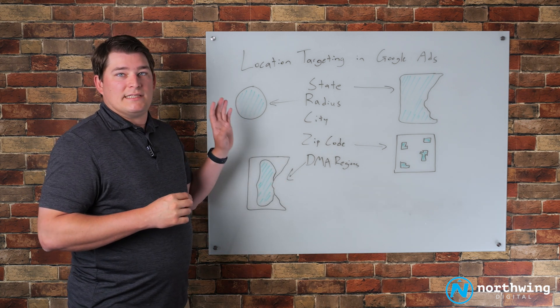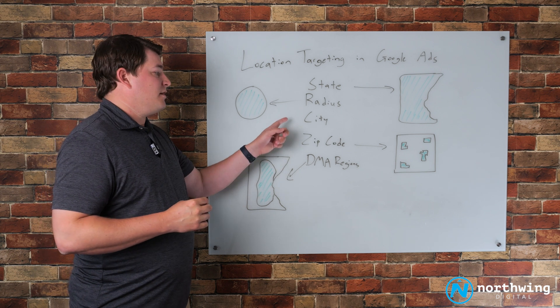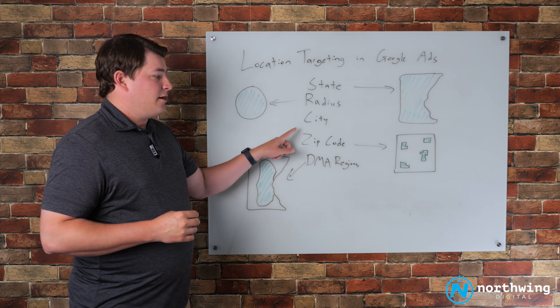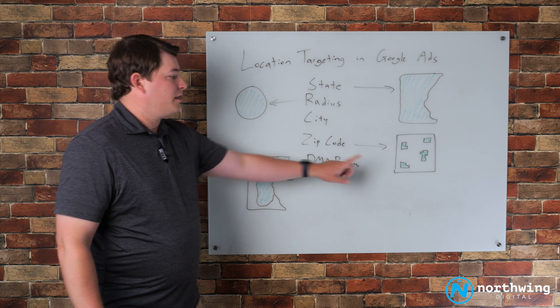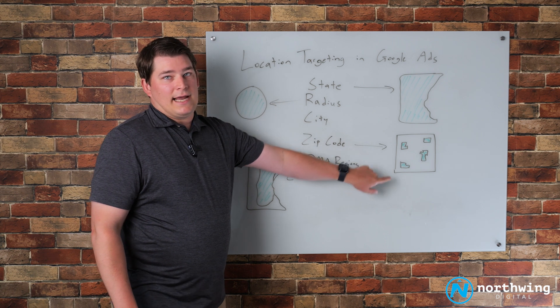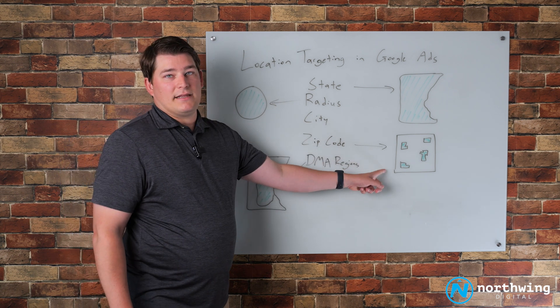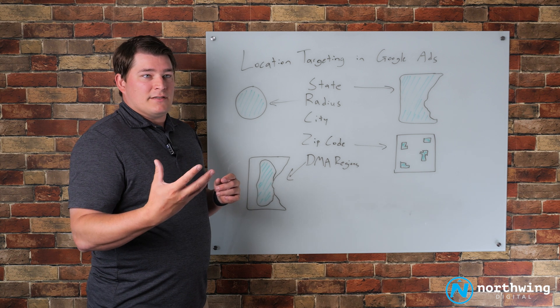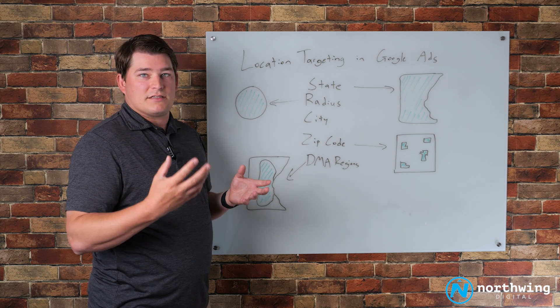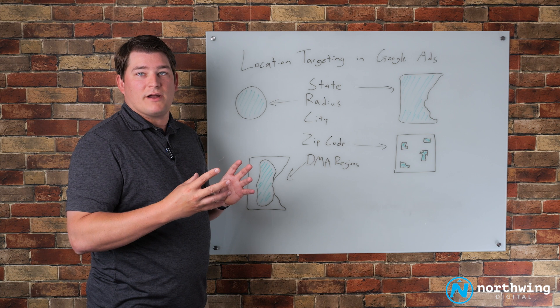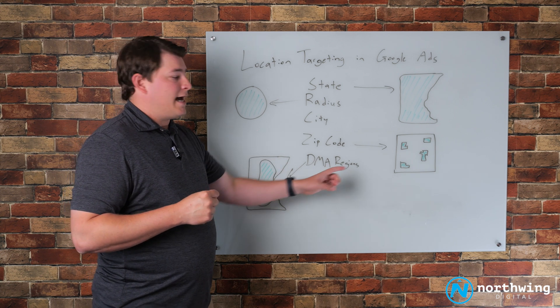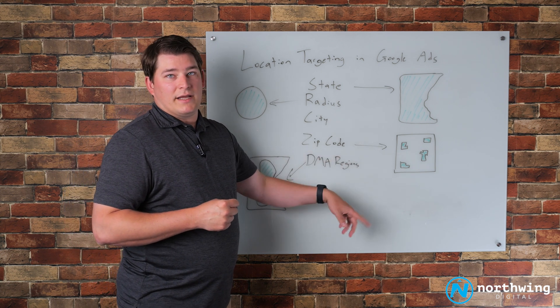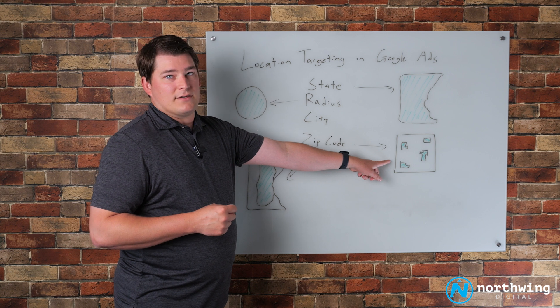Oftentimes, when we see campaigns or inherit campaigns where they've tried to go by city or especially by zip code, this is what you end up getting, and that can really limit the targeting of your ads. Obviously, a lot of business owners or marketers think of their customer base in terms of the zip codes that they want to focus on. The problem with that is when you put in a big list of zip codes into the Google Ads location targeting...